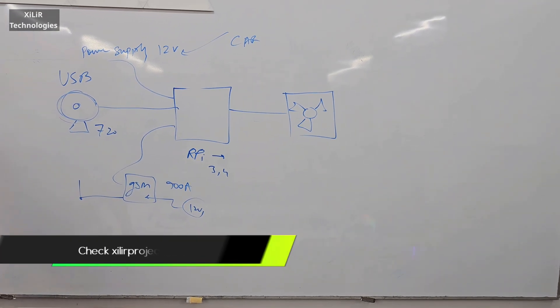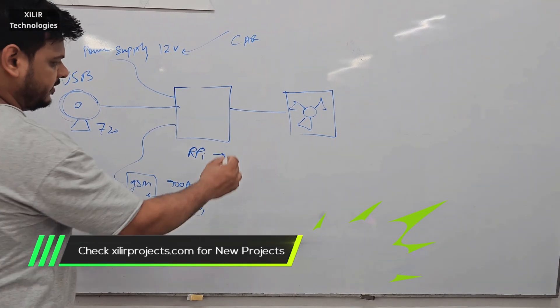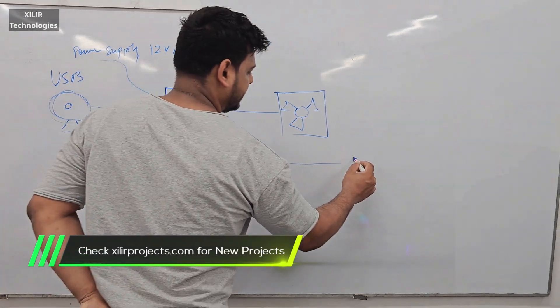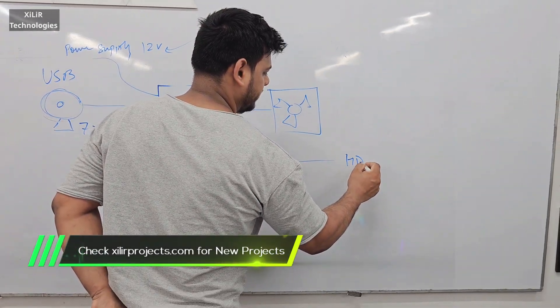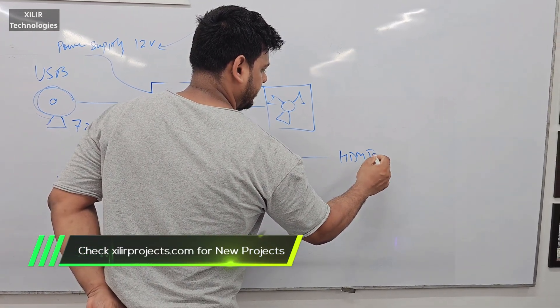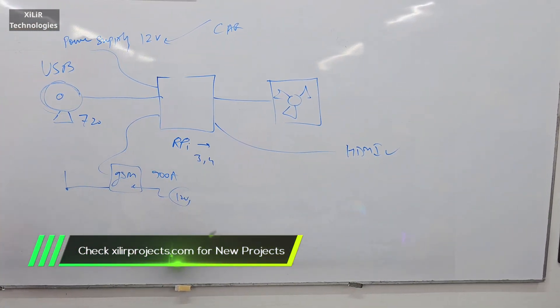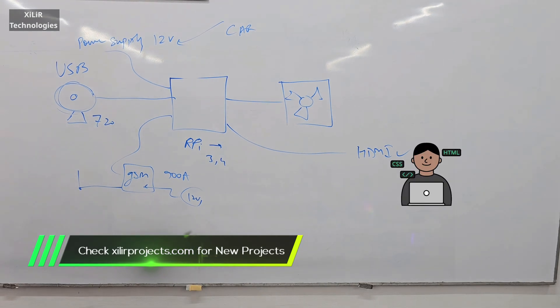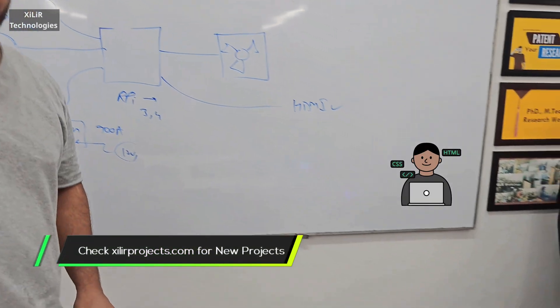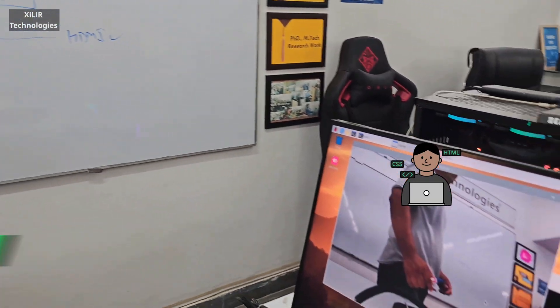Other things here are: you can also connect a PC to HDMI. And you will get the output to the camera here.